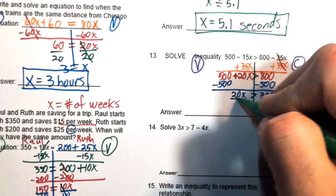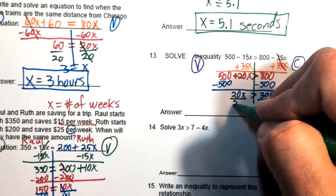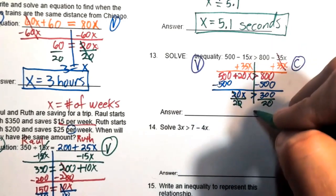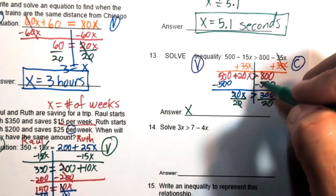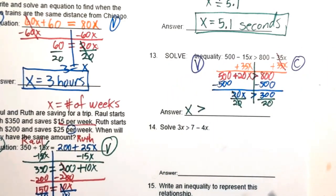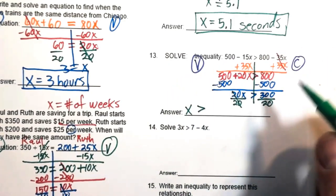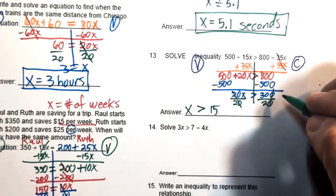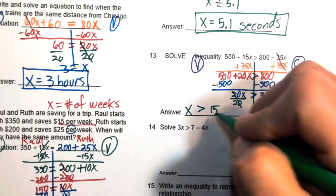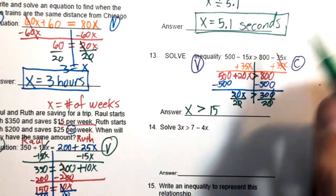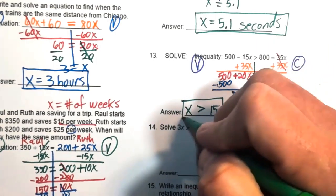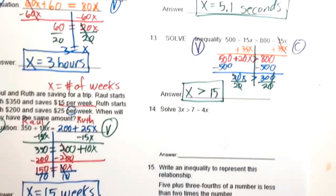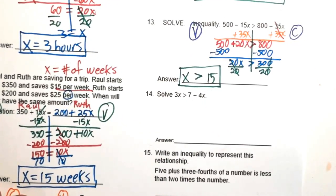Bring down 20x and the inequality. No flipping needed since we're dividing by positive 20. Divide both sides by 20: x greater than 15, since 300 divided by 20 equals 15.